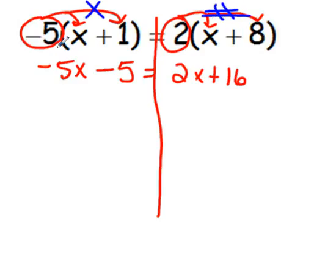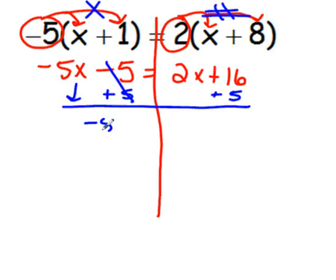I'm going to start on the left side, and I want to keep my variable term of negative 5x, but I want to move this constant of negative 5. So, I'm going to add 5 to both sides. Then, I bring down the negative 5x, the 2x, and now I have 16 plus 5, which makes 21. Make sure to put the 5 under the 16, because they are both constants.